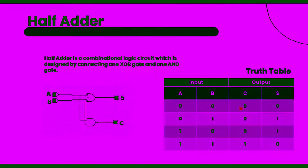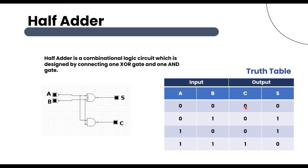Here this 2-bit binary number equals 0 and this binary number equals 1. Here also this binary number equals 1, and this binary number equals 2. Now let's discuss the full adder circuit.